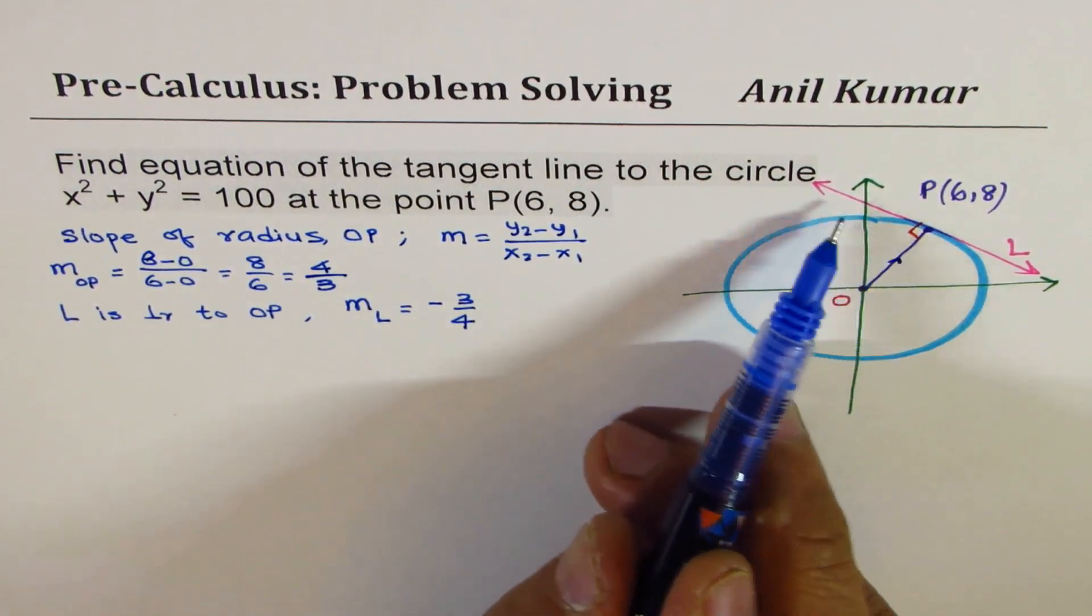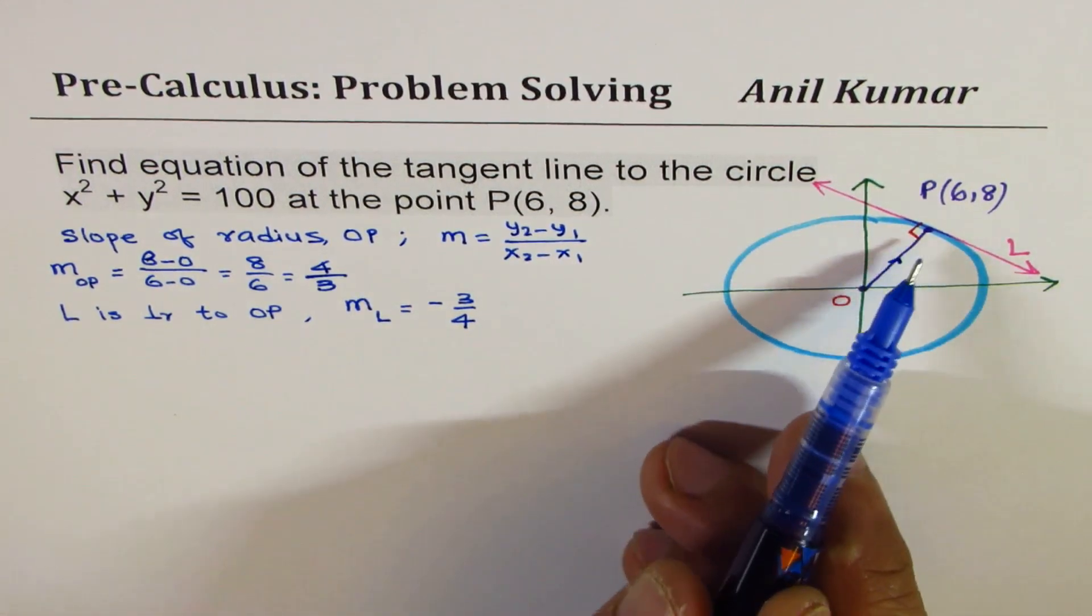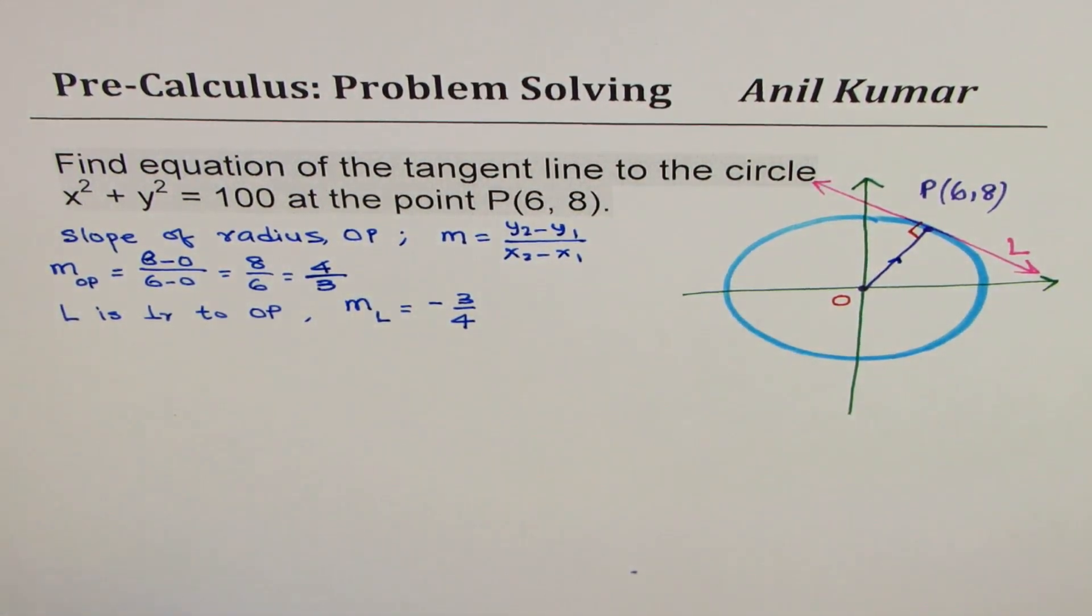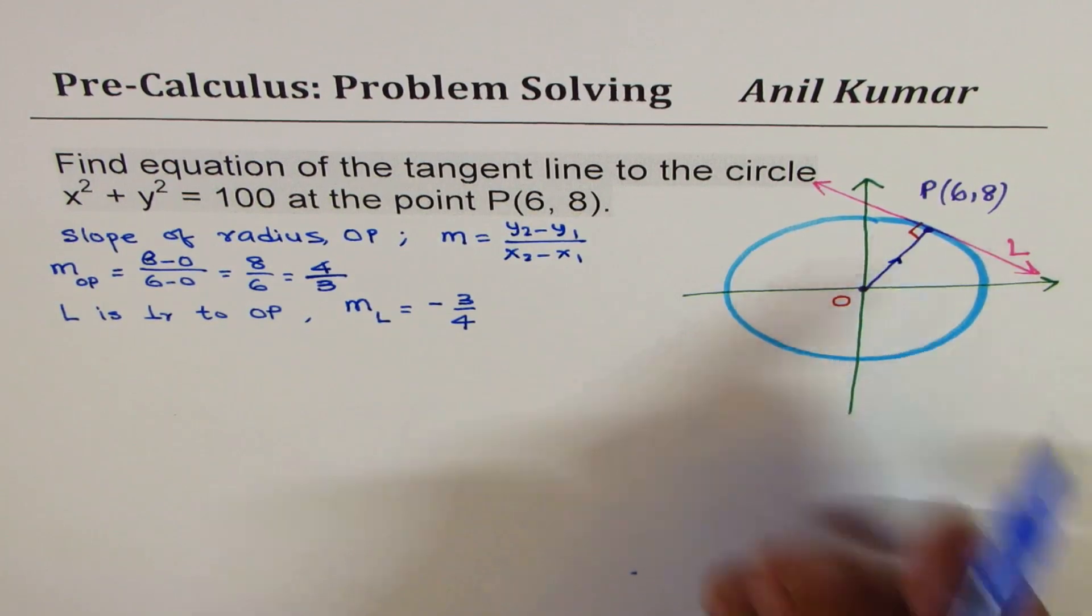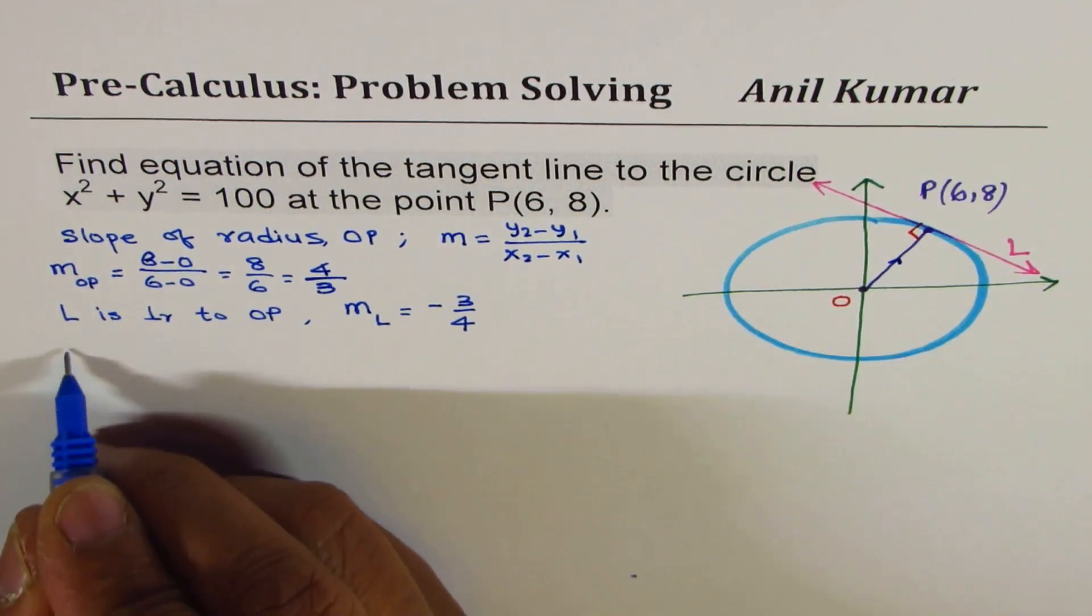So slope of the line mL is going to be negative reciprocal. That means negative 3 over 4. As you can also see, it is dropping downwards, so it should be negative.